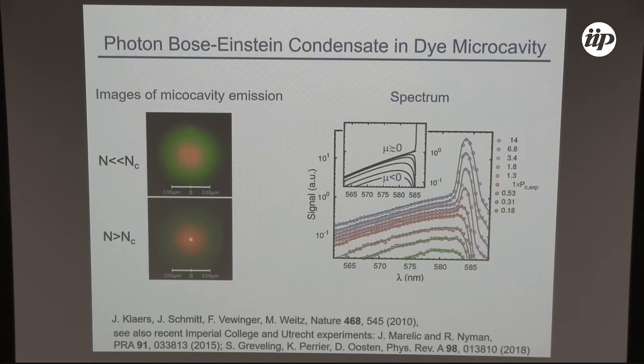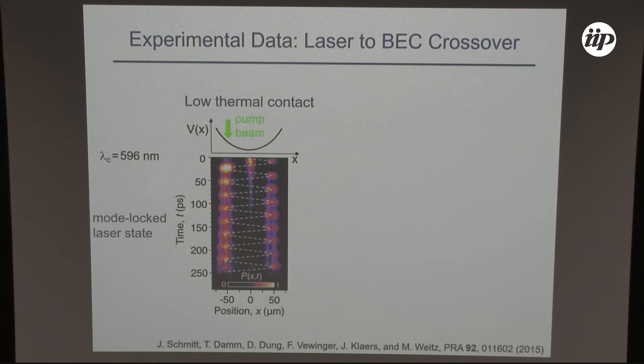There are now two more recent experiments — by Rob Nyman at Imperial College and Rizwan Otten at Utrecht — who basically see the same thing, and a fourth experiment is being built by Jan Klaers, who now has his own group.